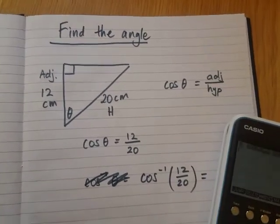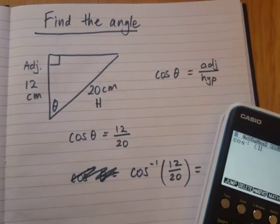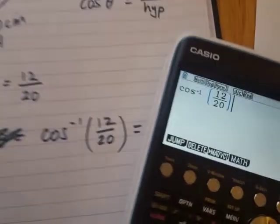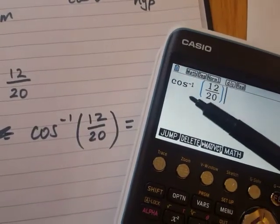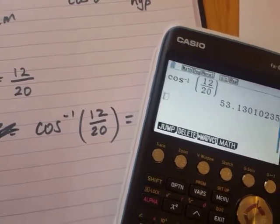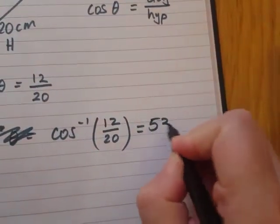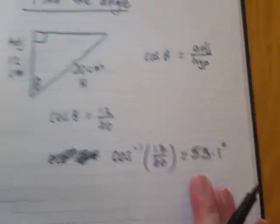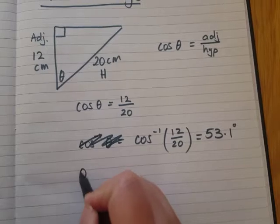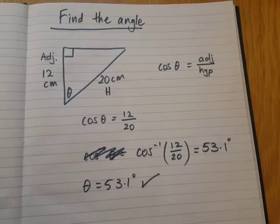So let's put it on our calculator. Inverse cos, 12 over 20. Let's double check. I've got the negative one, 12 over 20. Good. And there's the angle. 53.1 degrees. Therefore, our answer to the angle is 53.1 degrees. Let's just write it down. There we go. You have found the angle.